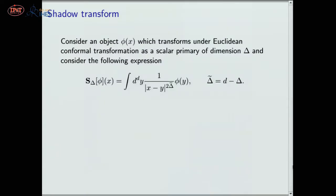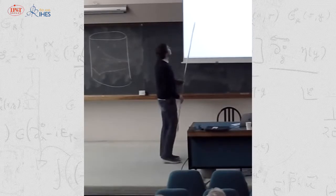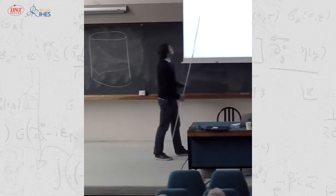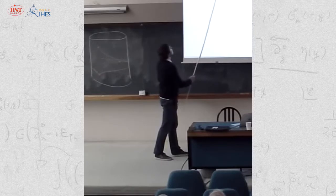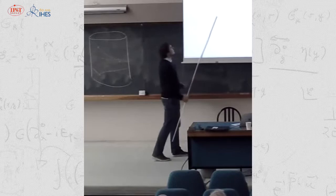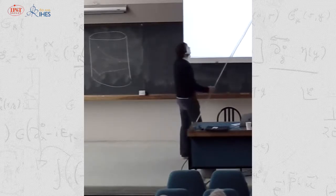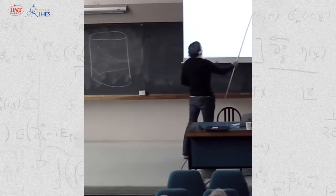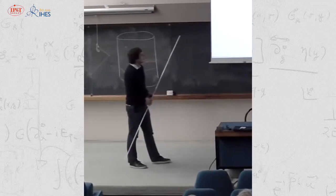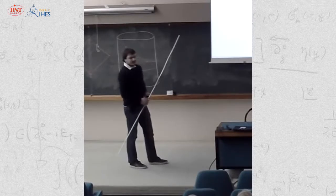The simplest example of a Knapp-Stein intertwining operator is the so-called shadow transform, which is of course well known. I will denote it by the symbol S_Δ. We can apply the shadow transform to functions of x; for simplicity we look at scalar functions, and the transform is given by this expression where Δ is some parameter and we use Δ-tilde, which is d minus Δ, where d is the dimension of space. For now we are working in Euclidean signature.